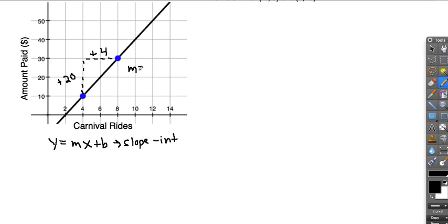Recalling that slope is the up, or the change in y, over the change in x, I have a slope of twenty over four, or five. So I've got the first value in the equation.